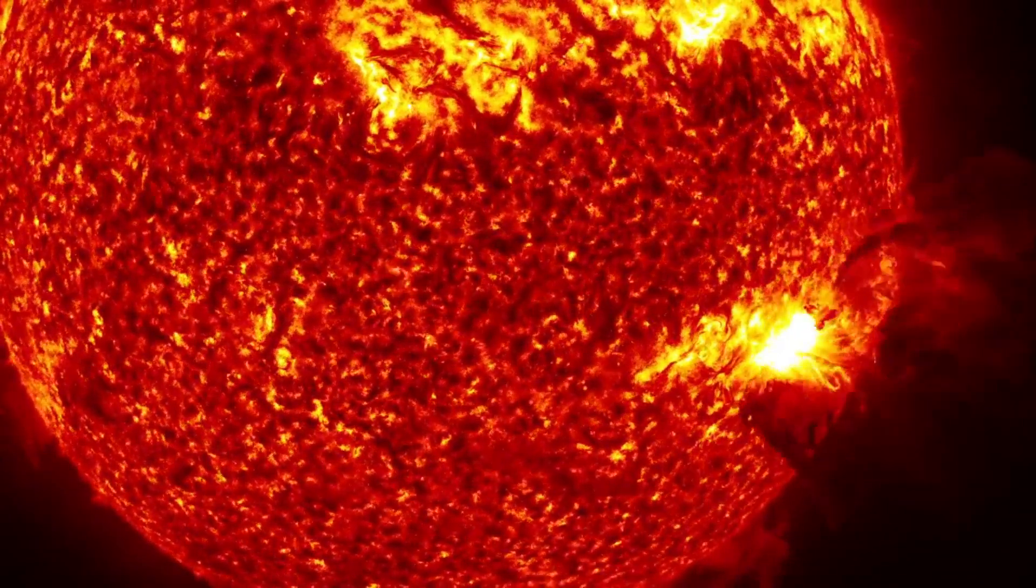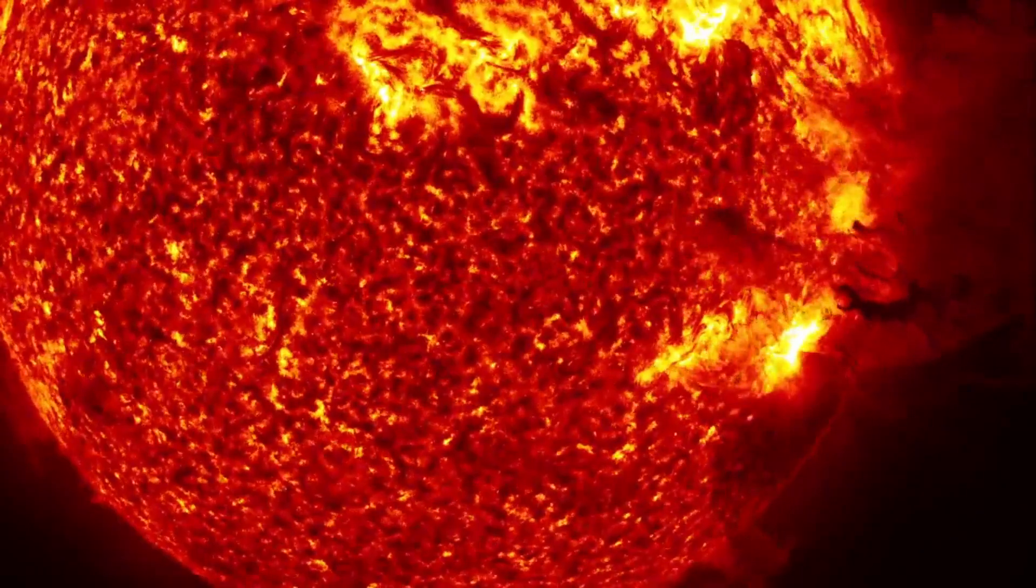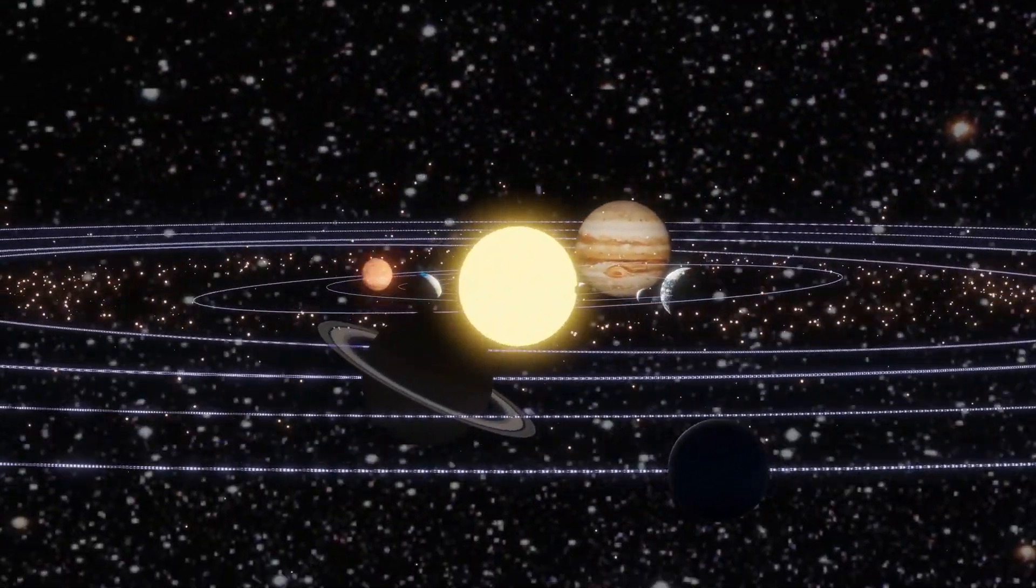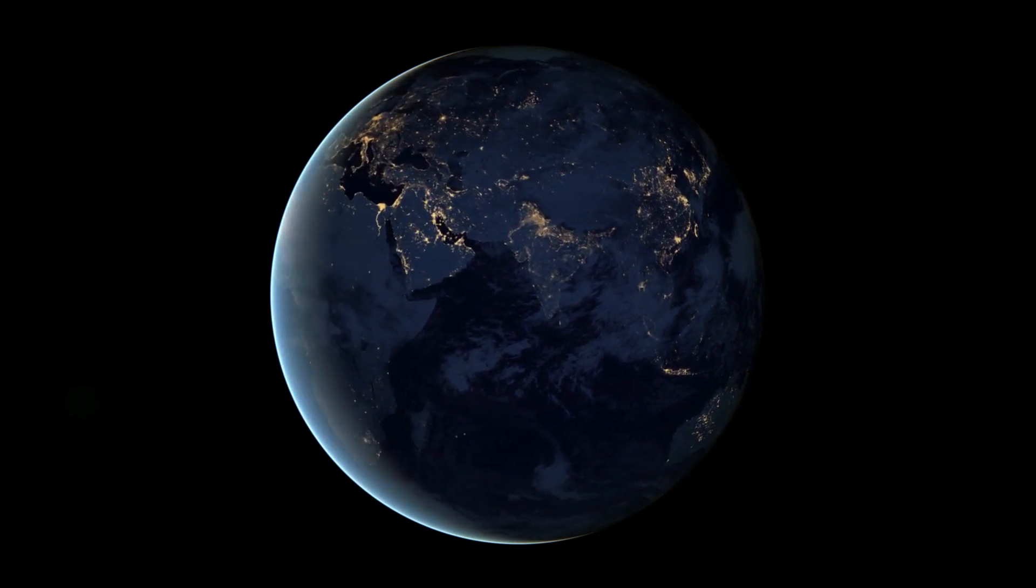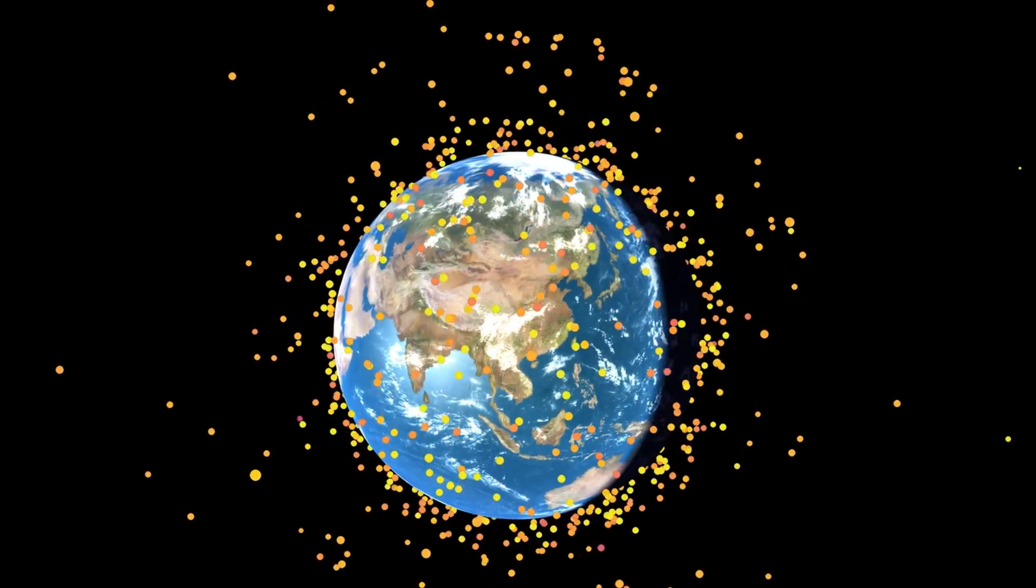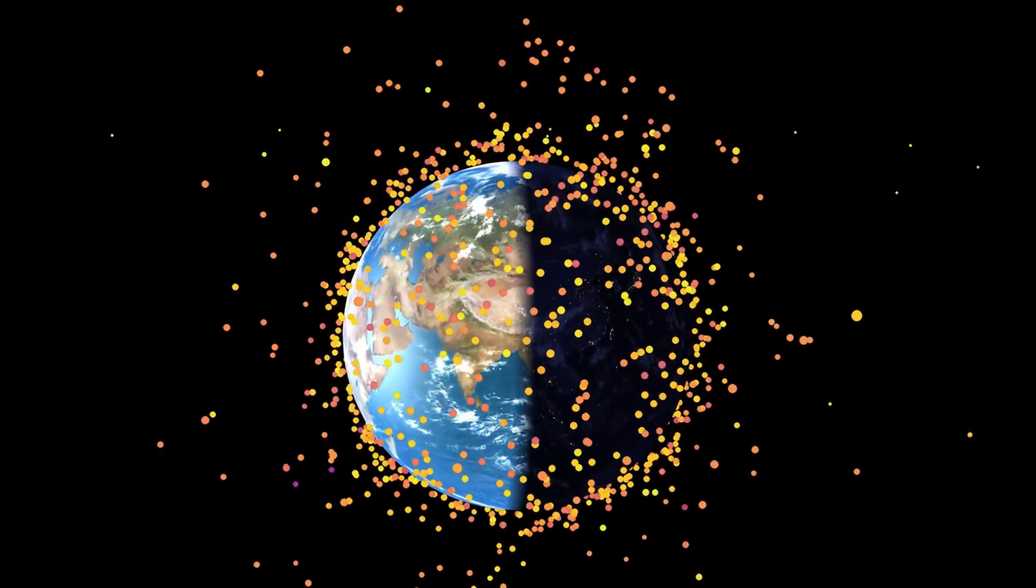Additionally, the Sun's continuous explosive activity gives rise to solar storms, which have a significant impact on the solar system. Earth, being a part of this system, is prone to these effects. Satellites orbiting Earth can be impacted by these solar storms.